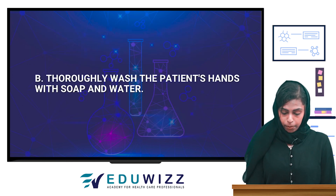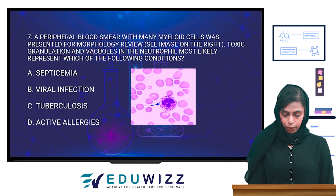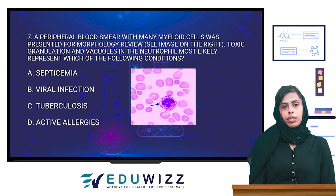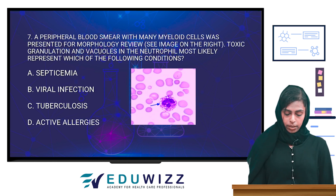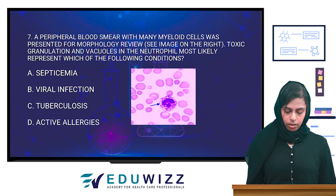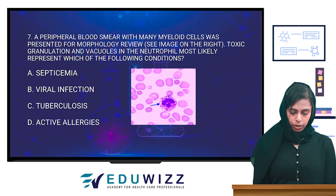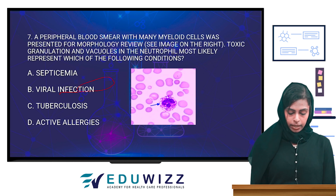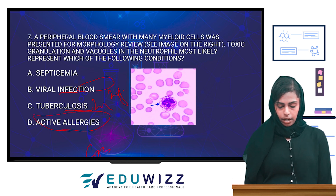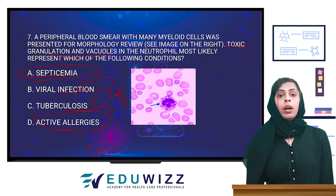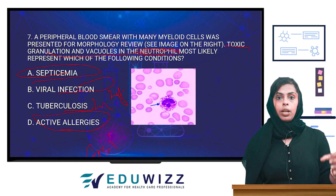A peripheral blood smear with many myeloid cells was presented for morphology review. Toxic granulation and vacuoles in the neutrophils most likely represent which condition? The options are septicemia, viral infection, tuberculosis, and active allergy. The answer is septicemia.